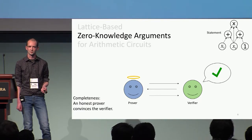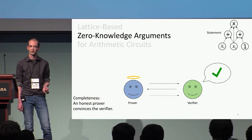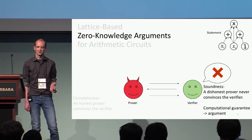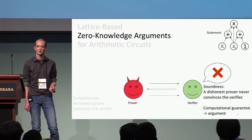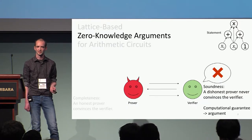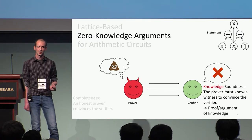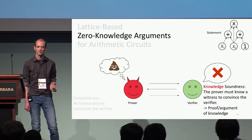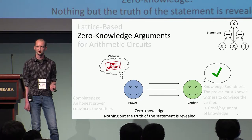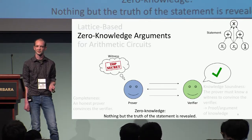All zero-knowledge proofs should satisfy three basic properties. We've got completeness: if the statement's true, the verifier should always accept the proof. We've got soundness: a dishonest prover trying to prove a false statement should never convince the verifier. If this is only a computational security guarantee, we get the word 'argument.' We can strengthen this to knowledge soundness, meaning the prover actually has to know a witness to convince the verifier — giving a proof or argument of knowledge. The last property is zero-knowledge: the verifier or anybody else who sees the proof can't learn anything about the prover's witness; they just learn that the statement was true.